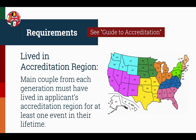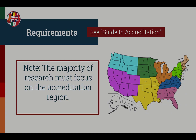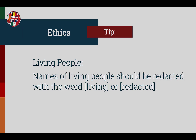Another requirement is that the main subject and his or her ancestors from the following generations must have lived in the applicant's accreditation region for at least one event in their lifetime. A record such as a census or a land record indicating that the person lived in the region at some point counts as an event. Although each couple may have had events outside of the accreditation region, it is a requirement that the majority of the research for a Level 1 project be focused within the accreditation region.